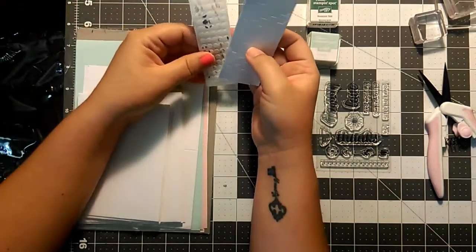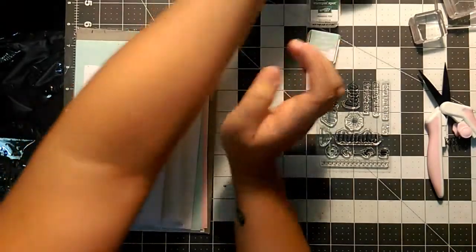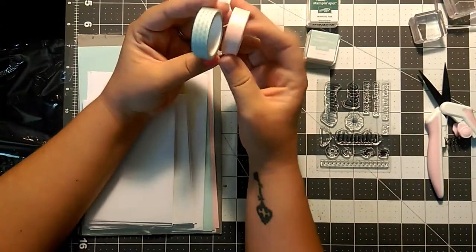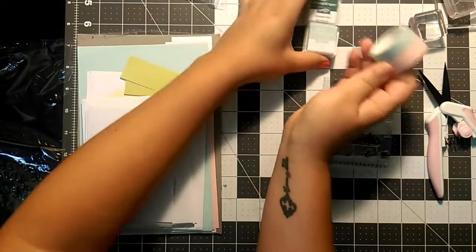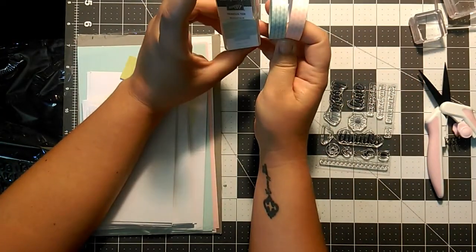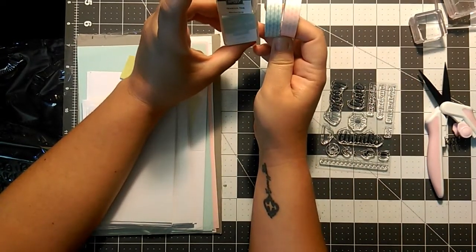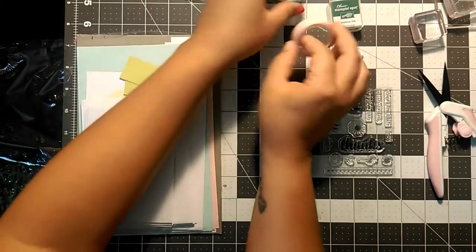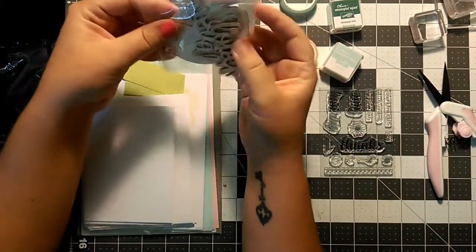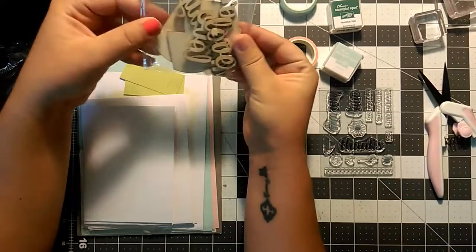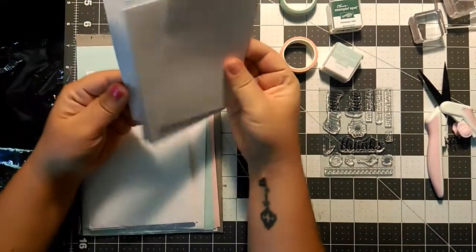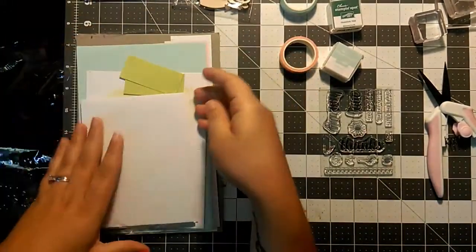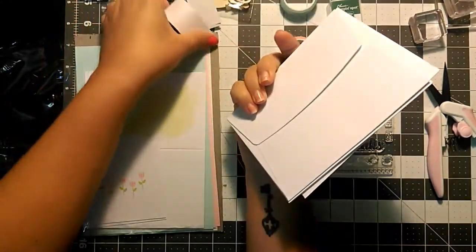We have adhesive. I see that we had two rolls of washi tape, which is awesome, and the two inks, which is just awesome to get in this month's kit. There's some little wood embellishments, laser-cut wood.